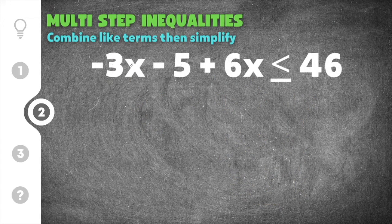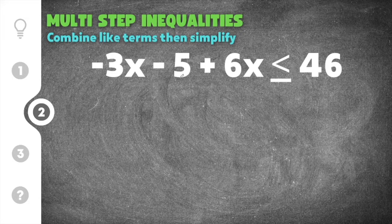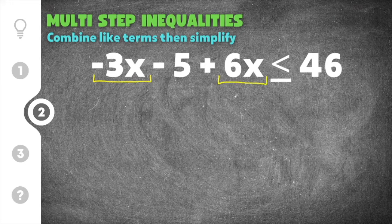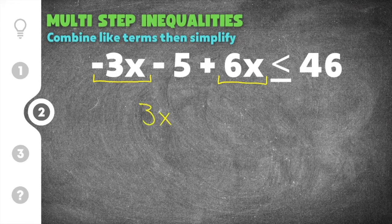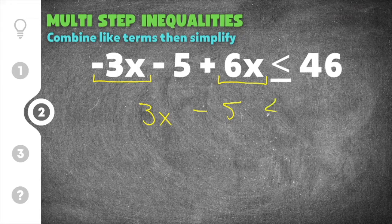The second practice problem gives us negative 3x minus 5 plus 6x is less than or equal to 46. We have like terms on the left side of the inequality, so the first thing we have to do is combine them. We're going to combine the terms that have an x in them. So we have negative 3x plus 6x. Negative 3 plus 6 is positive 3, so we have positive 3x. We bring down minus 5 and we bring down less than or equal to and 46 because those did not change.